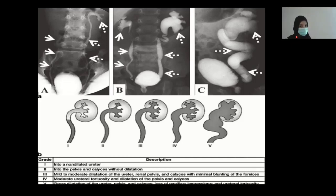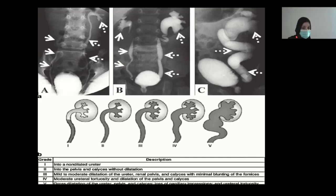An important finding on the cystourethrogram in both pediatric and adult populations is vesicoureteral reflux, graded as follows: Grade 1 — non-dilated ureter; Grade 2 — fills pelvis and calyces without dilatation; Grade 3 — mild to moderate dilatation of ureter, renal pelvis and calyces with minimal blunting; Grade 4 — moderate ureteral tortuosity and dilatation of pelvis and calyces; Grade 5 — gross dilatation of ureter, pelvis, and calyces.